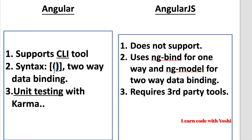Angular supports two-way data binding with its own syntax, whereas AngularJS uses ng-bind and ng-model. ng-bind is for one-way data binding and ng-model is for two-way data binding.